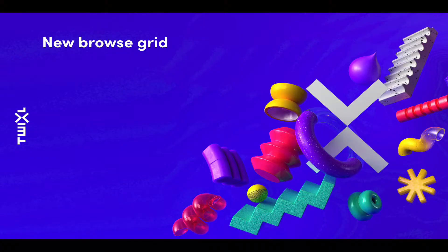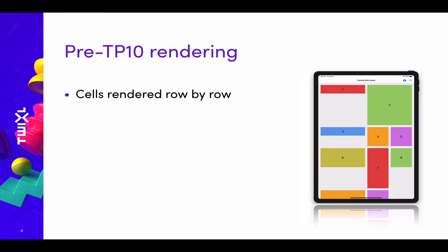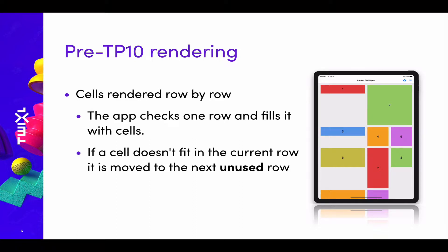Let's look at the new browse grid in Twixl Publisher 10. Here you can see two screenshots: the one on the left is how content items would be rendered in Twixl Publisher 9 or earlier, and on the right you see how these same items are rendered in Twixl Publisher 10. It's all about auto flow and filling up the gaps. In pre-Twixl Publisher 10 rendering, cells were rendered row by row and the app would always check one row and fill it with cells.